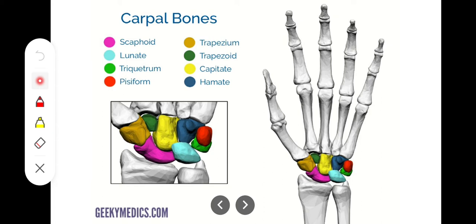There are basically eight carpals arranged in two rows of four. The first proximal row contains, from lateral to medial: the scaphoid, the lunate, the triquetrum, and the pisiform. The distal row contains, again from lateral to medial: the trapezium, the trapezoid, the capitate, and the hamate.